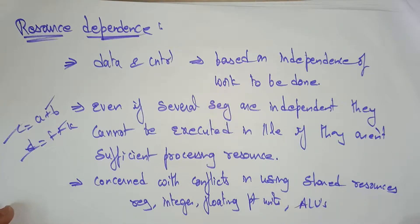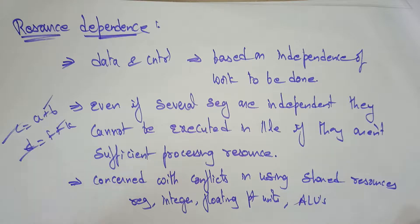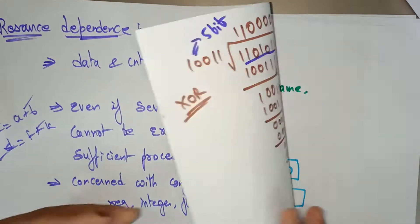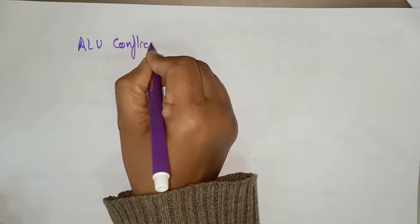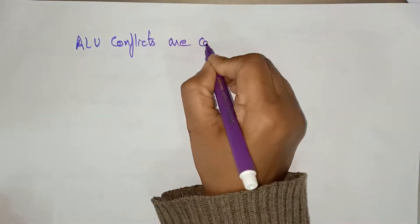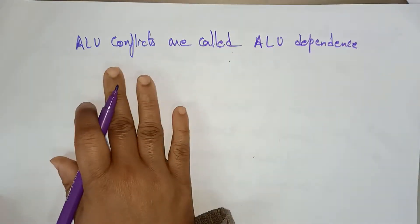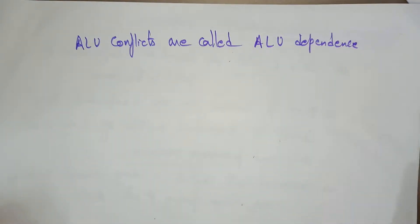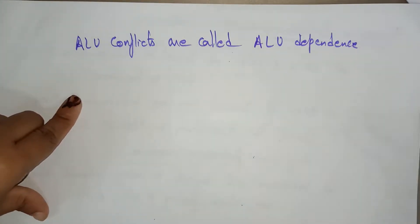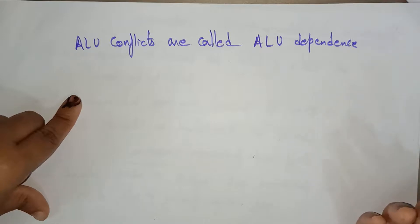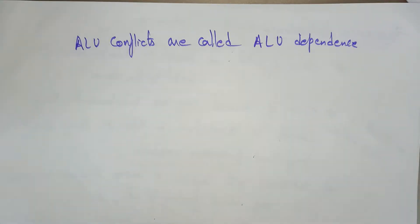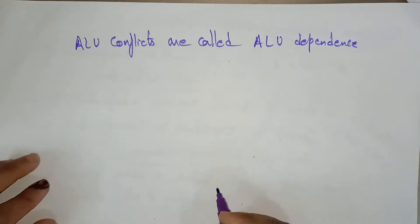If you take the ALU, the ALU conflicts are called ALU dependency. When the arithmetic logic unit dependency relationship exists, ALU conflicts occur because different dependency statements try to use the arithmetic logic unit simultaneously, overwriting or sharing the same resource at the same time.